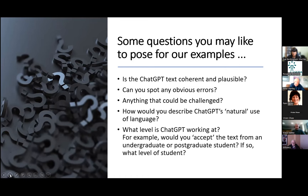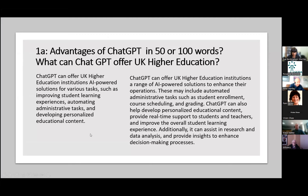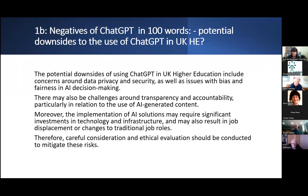Let's look at example one. One of the interesting things is that you can actually ask it to present an answer in a specified number of words. We asked: what can ChatGPT offer UK higher education — in 50 or 100 words. So you can have something quite concise, interesting for abstracts. You can then add further questions — it's an iterative process as you research a topic, asking the next question, the next question. We then asked for more: what are the negatives of ChatGPT in 100 words, and what are the potential downsides?